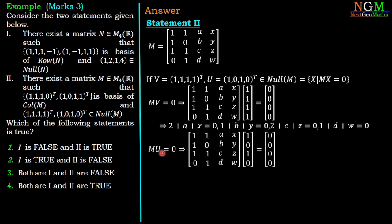Then the second equation MU = 0. M multiplied with U = (1,0,1,0)ᵀ gives four equations: 1 + A = 0, 1 + B = 0, 1 + C = 0, and D = 0. These four equations give the values A = -1, B = -1, C = -1, and D = 0.